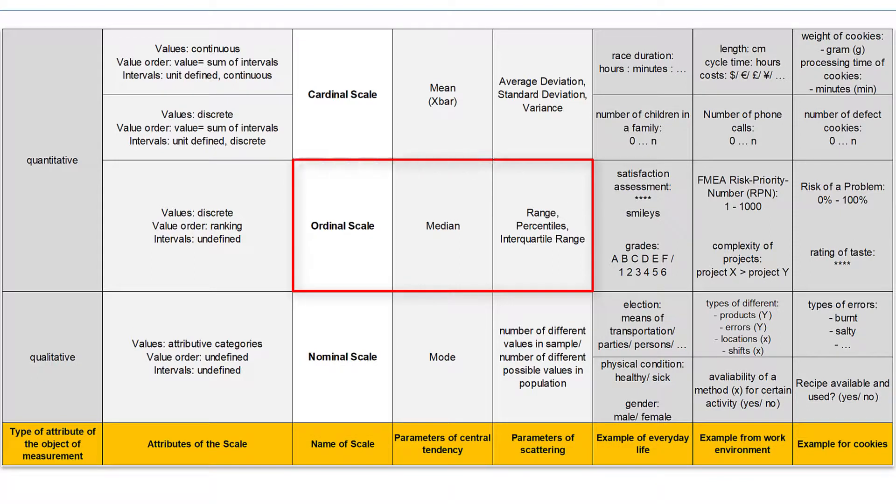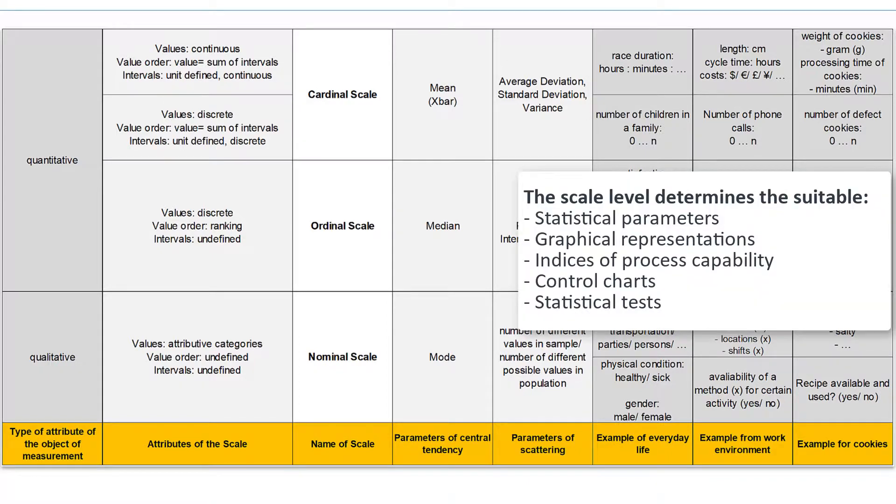Scattering parameters on the nominal scale are irrelevant to us. The position parameter of the ordinal scale is the median, and scattering parameters are for example the range and percentiles. On the uppermost level, the mean value and the standard deviation can be calculated for the cardinal scale. In addition to the parameters, the scale level also determines the possible graphs and limits the scope of suitable statistical tests.